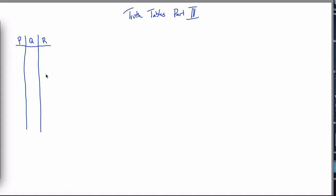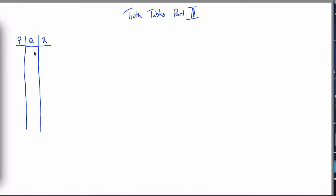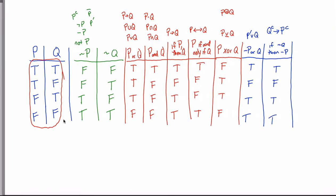You could fill it out in any order you want, but there's a standard way these are listed. The idea is to take the T's and F's as we wrote them before — true, true, true, false, false, true, false, false — that same order, and write that in the rightmost columns. So write true, true; then true, false; then false, true; then false, false. I'm copying exactly what we saw in the previous video.